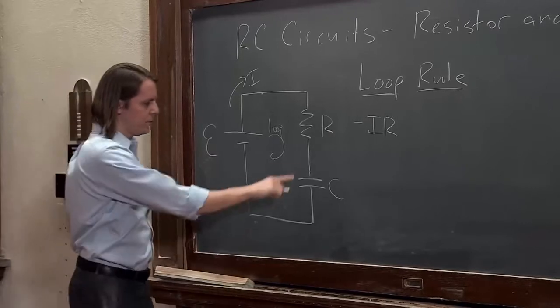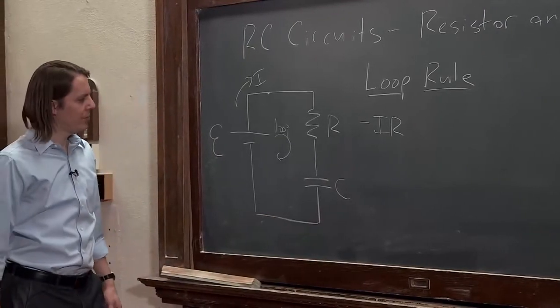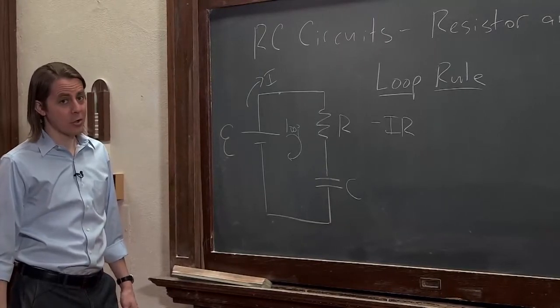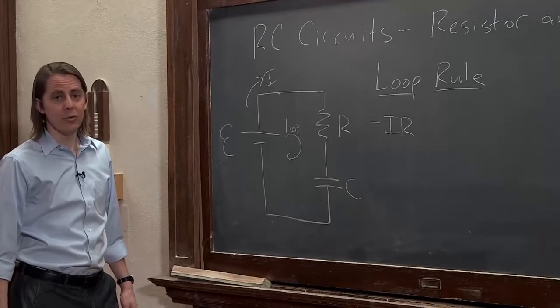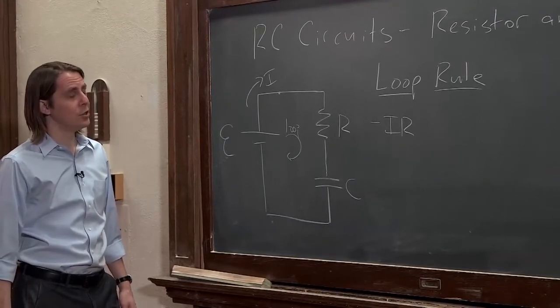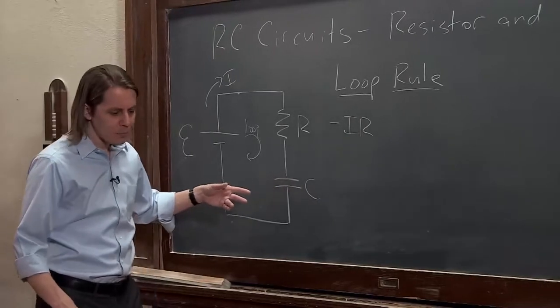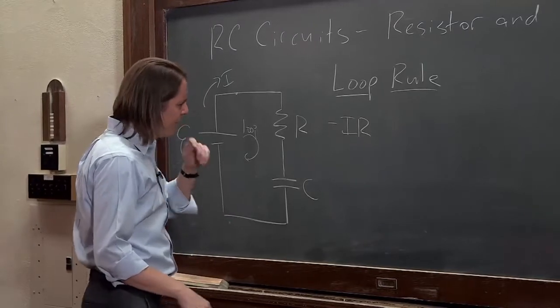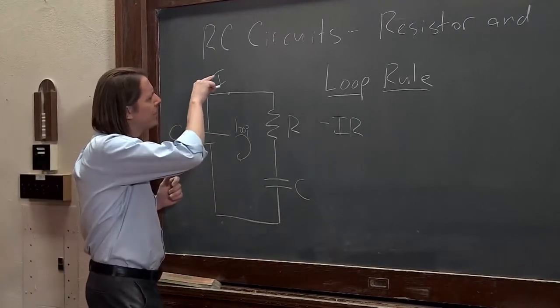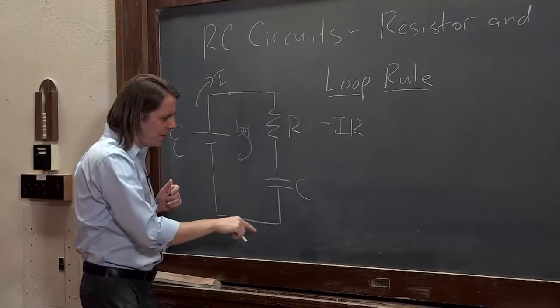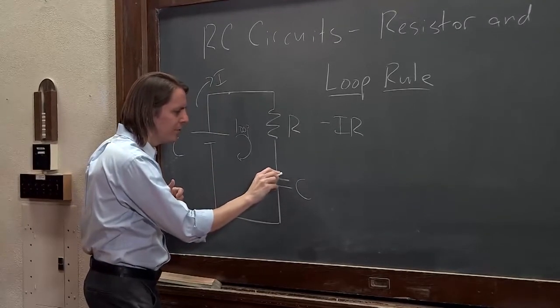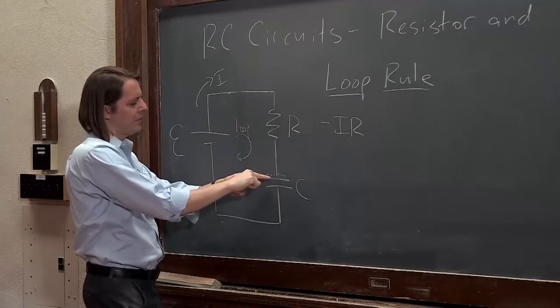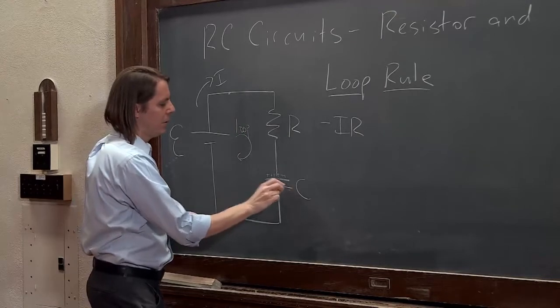And now I get to the capacitor. Well, what's the potential drop across a capacitor? It's not necessarily related to current. It's related to charge, right? CV equals Q. Or the delta V across the capacitor is the charge on its plates divided by the capacitance. So to get the sign right, let's really think about what's going on. I'm a test charge. If the current is flowing this way, that is going to charge up this capacitor plate positive.